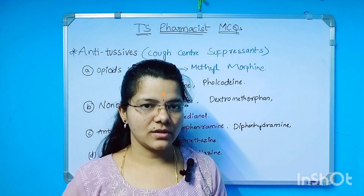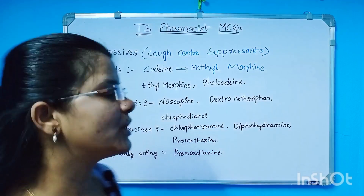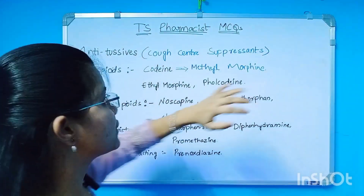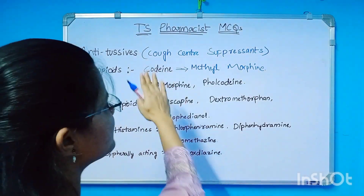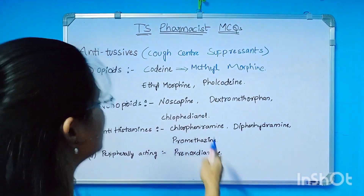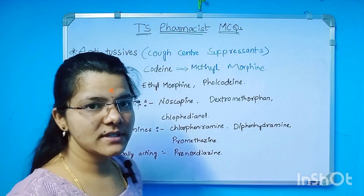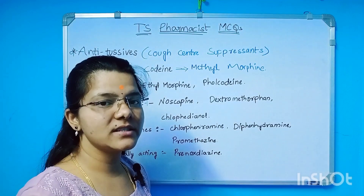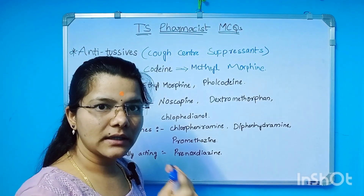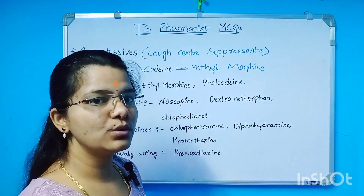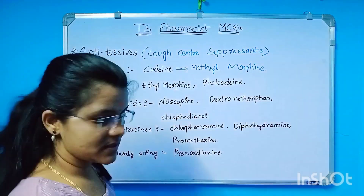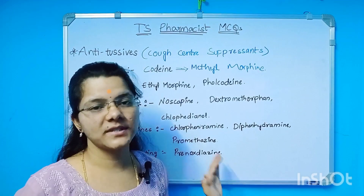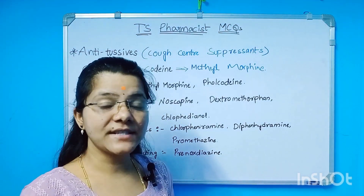Antitussive classification is clear. Antitussives are also known as cough center suppressants. In our central nervous system, the cough center is suppressed by antitussive drugs. Doctors do not always prefer these drugs.